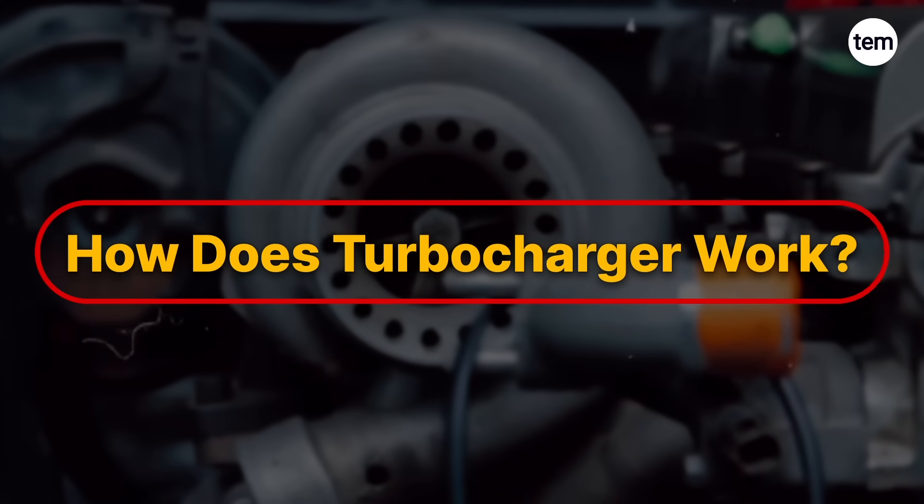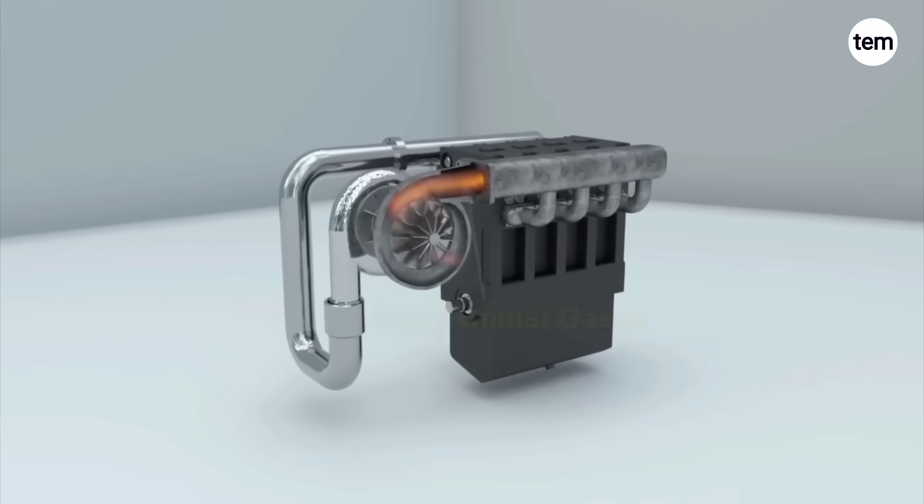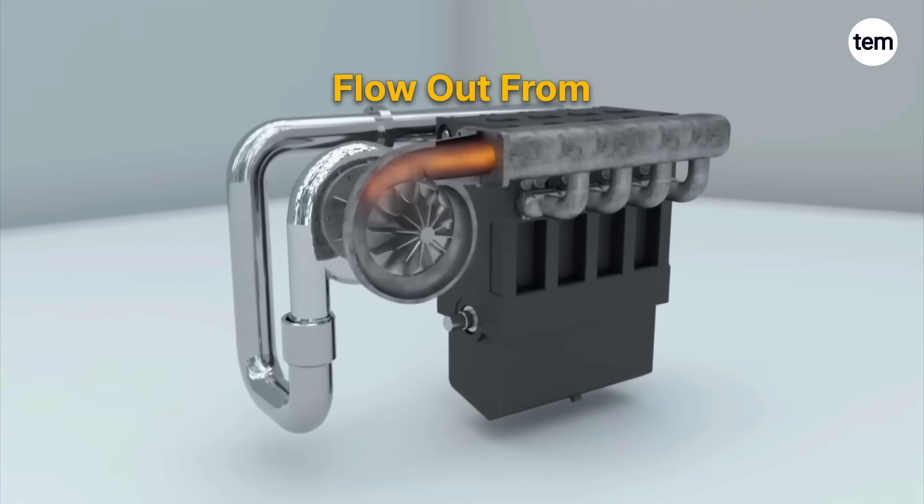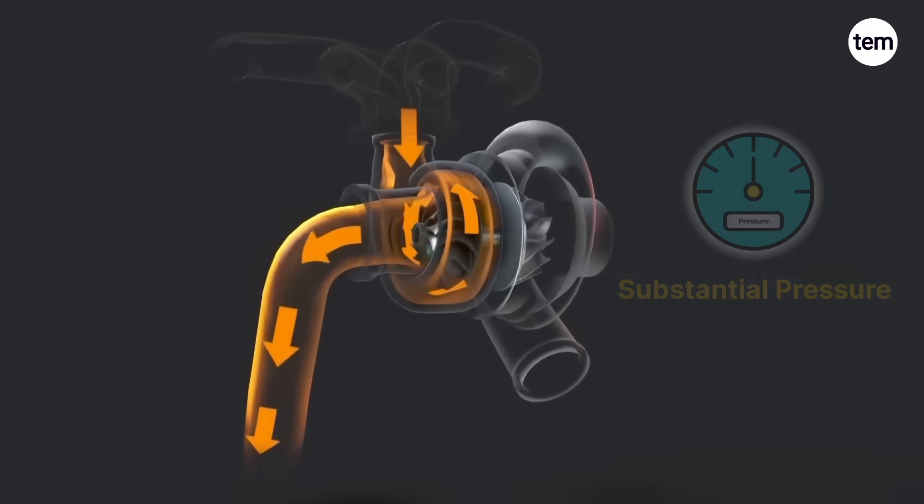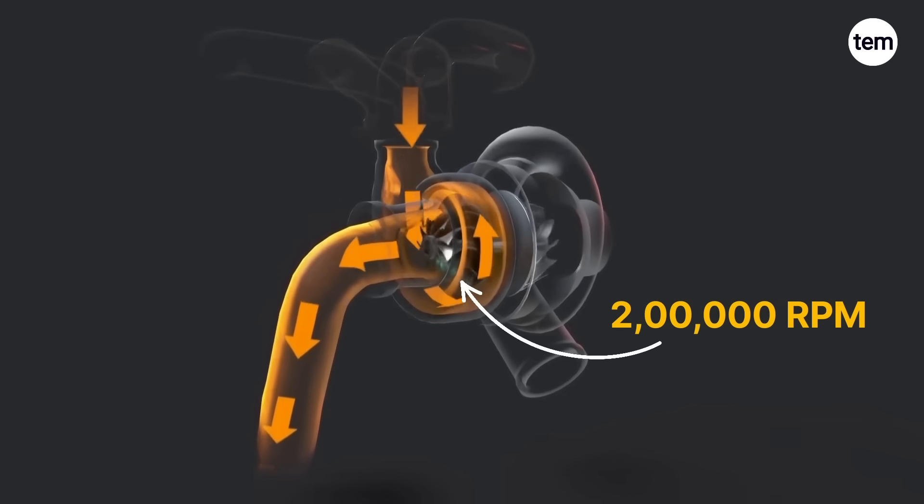Now let's see how does a turbocharger work. The turbine housing collects the hot exhaust gases which flow out from the engine and hits the turbine wheel with substantial pressure that rotates the turbine wheel up to 2 lakh RPM.